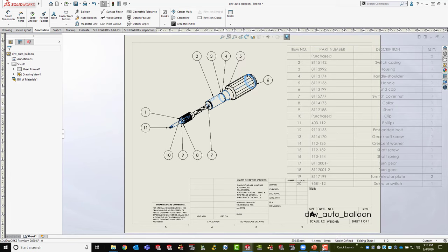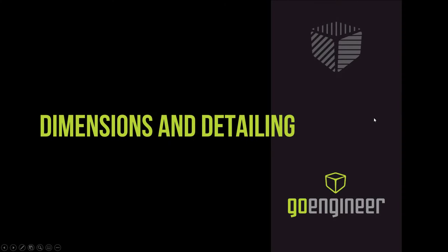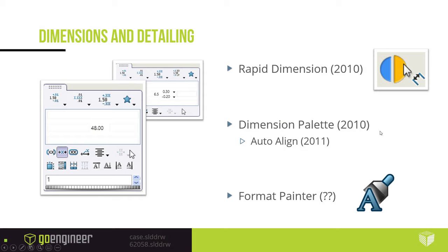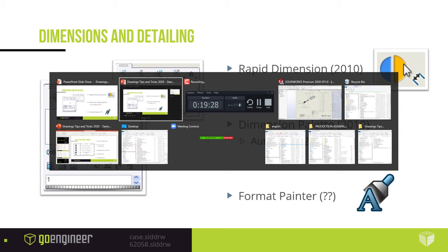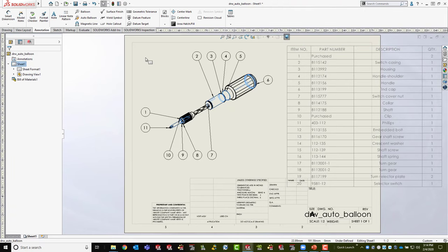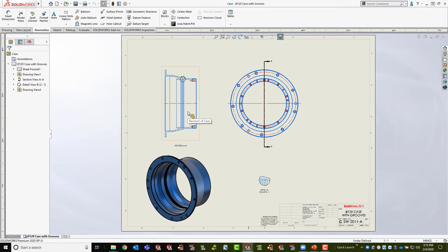Now for basic dimensions and detailing. Rapid Dimension is a tool where, as you place dimensions, it nests them by pushing others out of the way — simply hover over the widgets to push the dimension left, right, up, or down. It works for linear and radial dimensions alike. Settings for this are under Tools > Options > Document Properties, where you can control arrow functionality, offset distance from the part, and the 6mm spacing between subsequent dimensions.